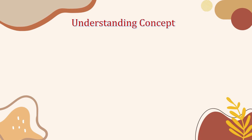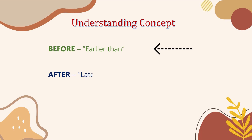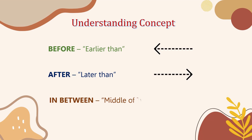Before numbers are the earlier number of the particular number, and we have to move always towards left or backwards. After numbers are the later number of that particular number, so to find the after number you should always move forward or towards right. In between numbers are the middle number of the two numbers.